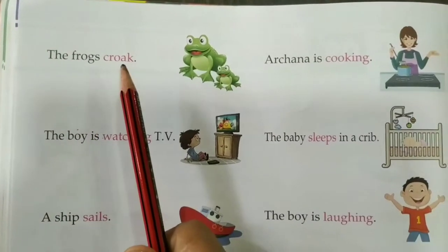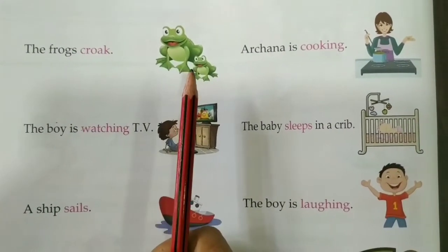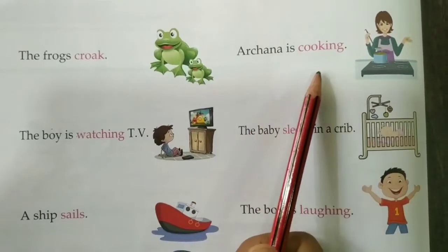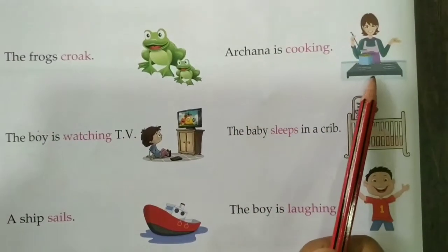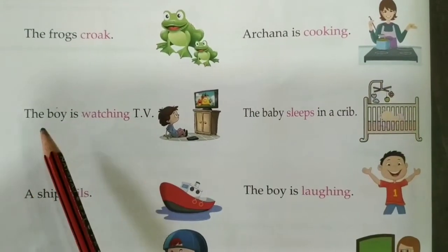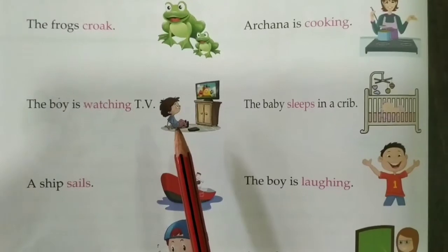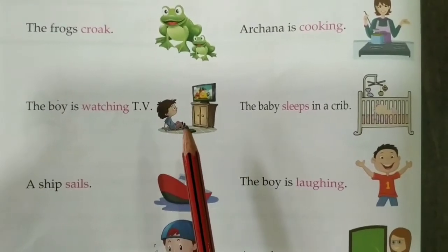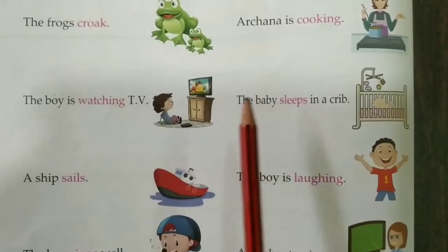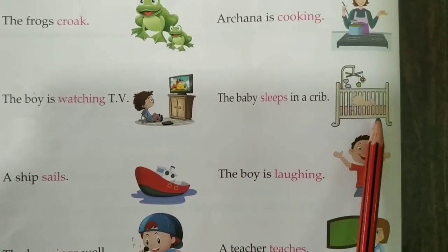The frog croaks — that is the sound made by frogs. Frogs croak. Achina is cooking — she is doing some work, an action: cooking. The boy is watching TV. What is the work done by this boy? The boy is watching TV. Watch. The baby sleeps in a crib.